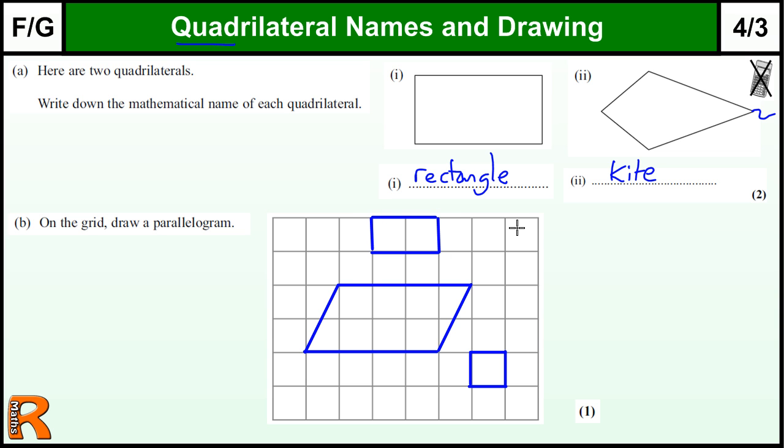And you could have drawn a rhombus, because that's a parallelogram. And that rhombus is, if I could squeeze it in here, it's this shape here, what you might call a diamond shape.